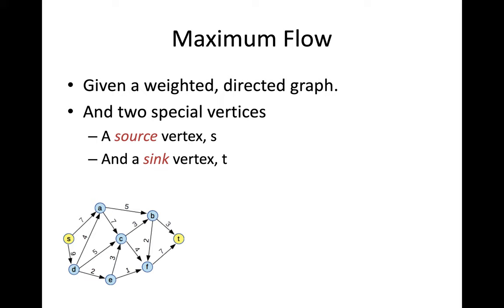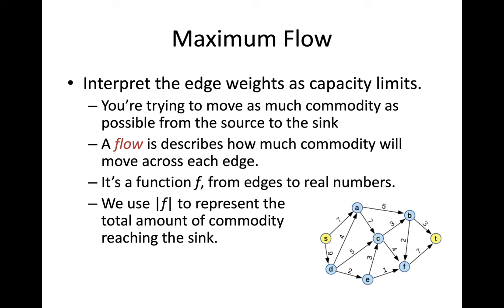Network flow is a graph problem. It assumes you've got a weighted, directed graph. You've got two special vertices marked in yellow: one is called a source vertex and the other is called a sink vertex. Each edge in the graph has a limited capacity — that's what the weight on that edge means.